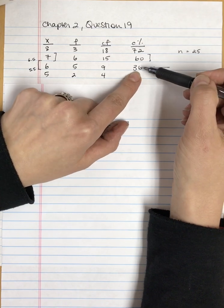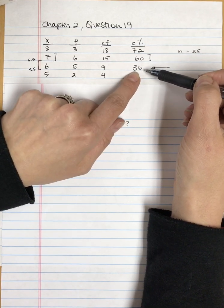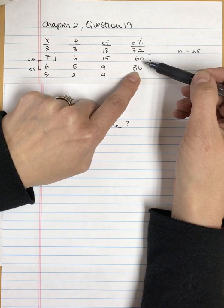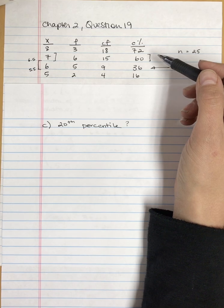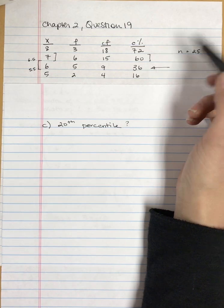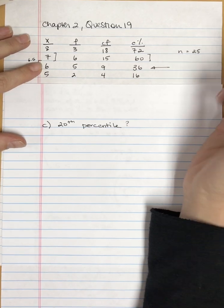It's going to be somewhere in this interval. I know that because the lower percentile is 16, but by the time I get up to 6.5, I'm at the 36th percentile, which is larger than 20. So it has to be somewhere between 5.5 and 6.5.